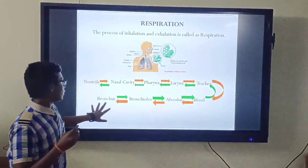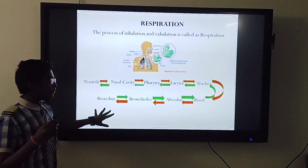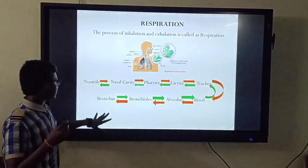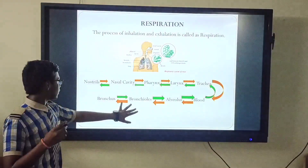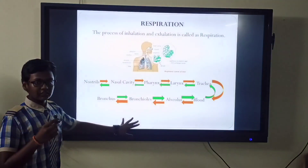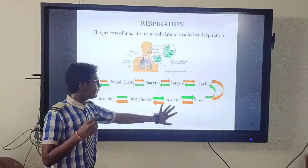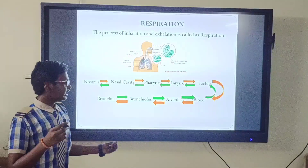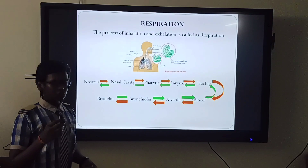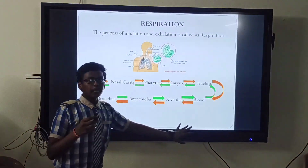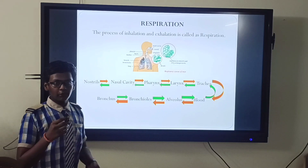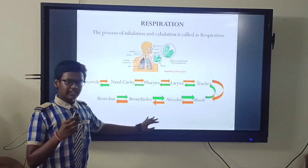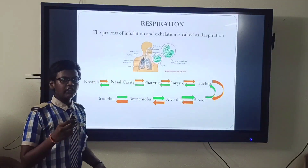Next, air enters into the bronchus. The bronchus is a windpipe that divides into two bronchi, one leading to each lung. Next, air enters into the bronchioles — small branches called bronchioles. Next, air enters into the alveolus, where air exchange takes place under a cluster of air sacs called alveolus. Then air enters into the blood, where blood carries oxygen to every part of the body and receives carbon dioxide from them. Carbon dioxide then goes out of our body through the same process in reverse.